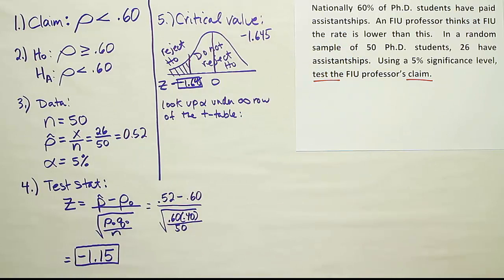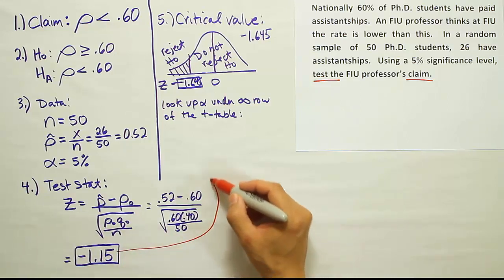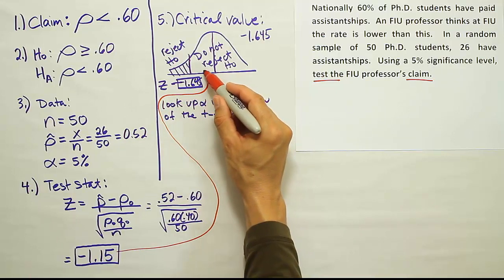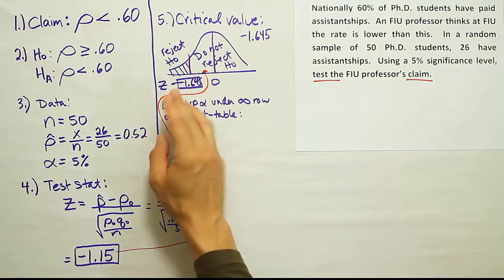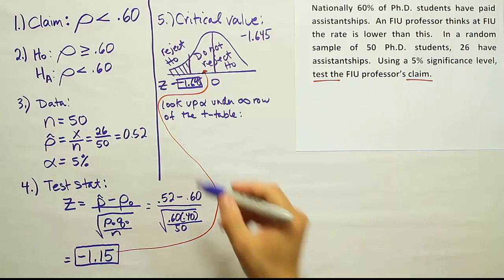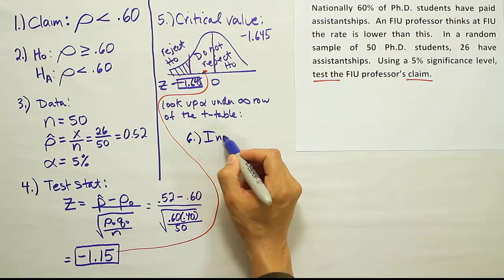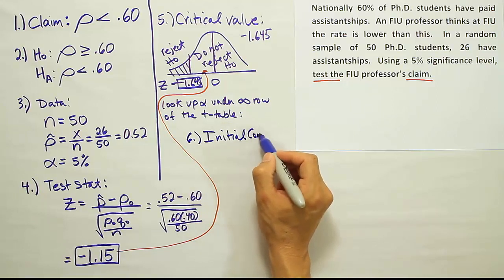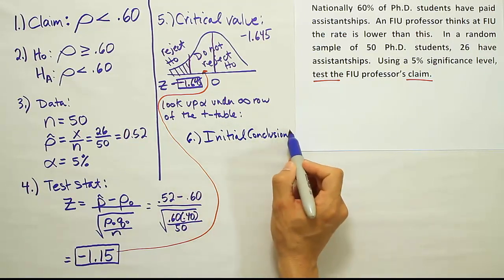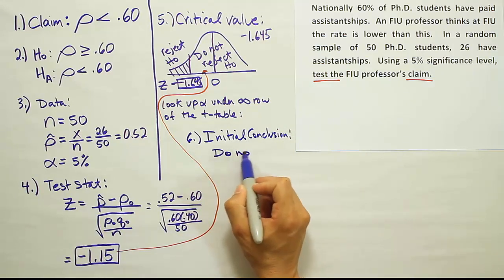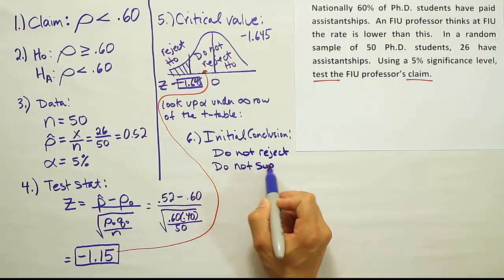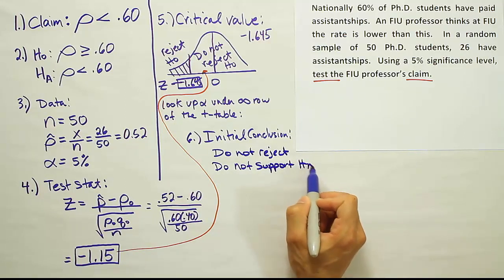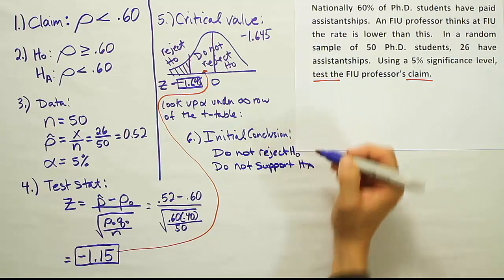Now let's compare that critical value to our test stat and see whether we reject H0 or not. Well, our test stat over here is something that's in the do not reject region. Because while it's to the left of 0, it's not far enough to the left to land in the reject H0 position. So at that point, our initial conclusion is going to be that we do not reject, and therefore that we do not support HA. So do not reject H0. Do not support HA.